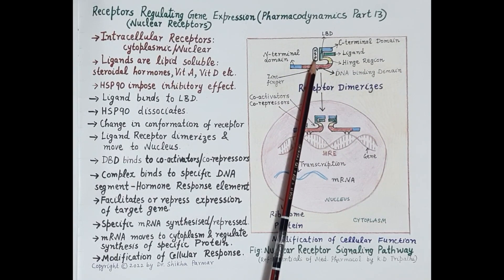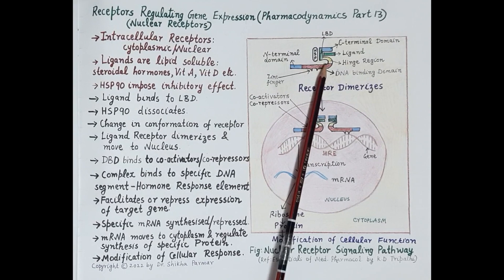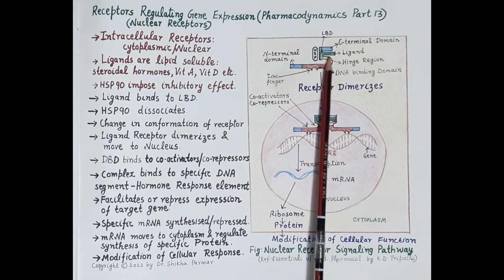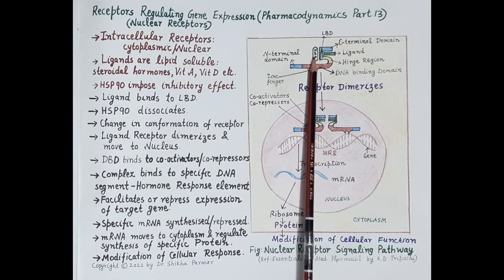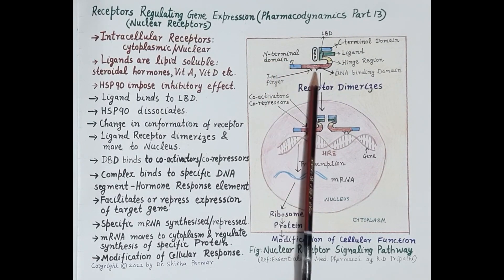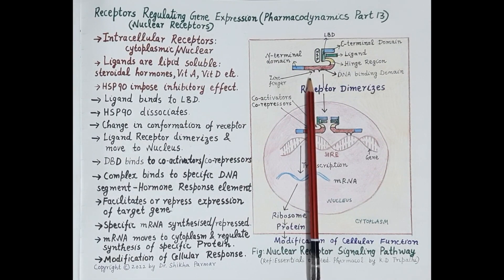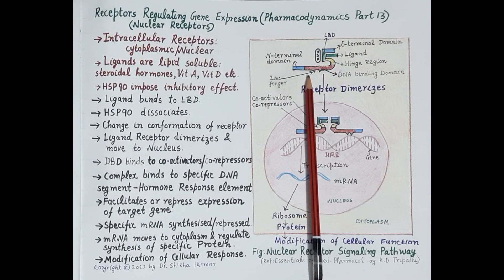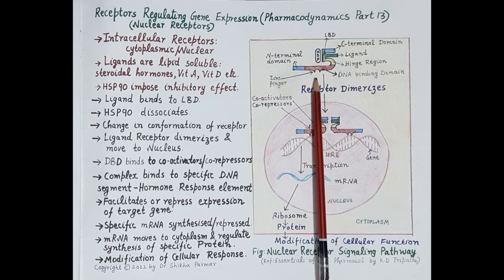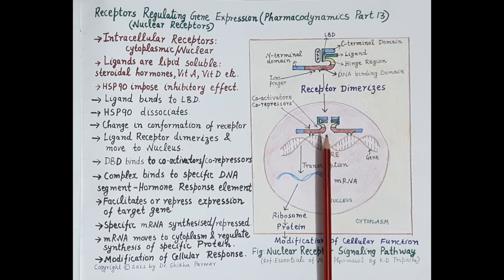Heat shock protein HSP90 imposes an inhibitory effect on the nuclear receptor. But as soon as the ligand binds to this receptor, heat shock protein dissociates and the receptor becomes active. This activated receptor changes its conformation, and the ligand-receptor complex dimerizes and moves to the nucleus.